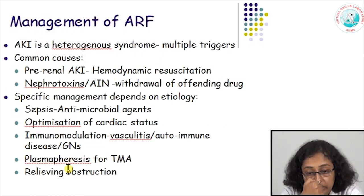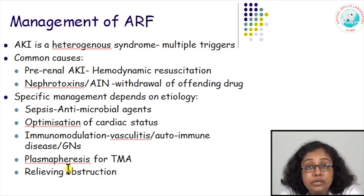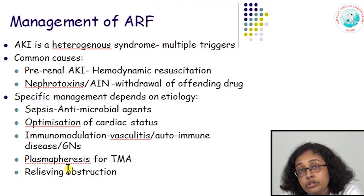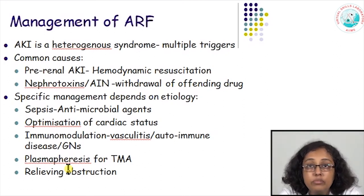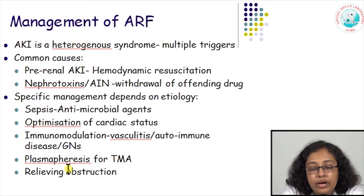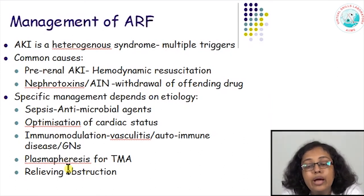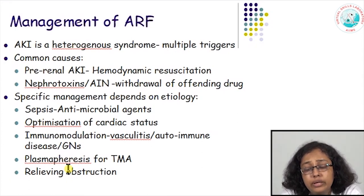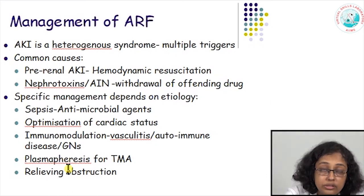Coming to management of acute renal failure — once you have diagnosed the cause and graded the severity, we must understand it is a heterogeneous disease with often multiple triggers. An elderly diabetic patient may come with diarrhea and vomiting causing AKI, then be given antibiotics, and may have also taken a painkiller. We need to address the most common factor — restoring renal perfusion — and withdraw the offending agent if there is a nephrotoxic insult. Specific management depends on etiology: treating with antibiotics for infection, optimizing cardiac status, using immunosuppression for vasculitis or autoimmune diseases, plasmapheresis for thrombotic microangiopathy, or simply relieving obstruction in obstructive uropathy.